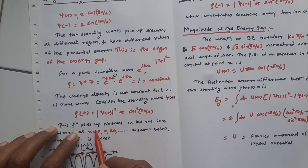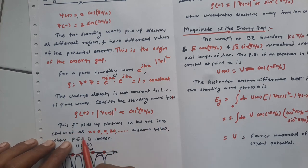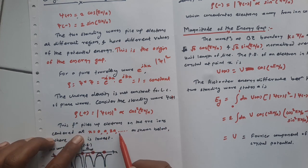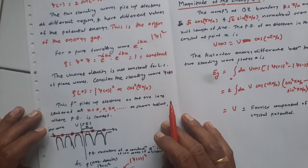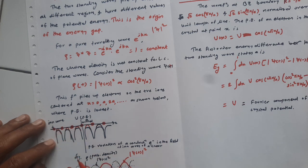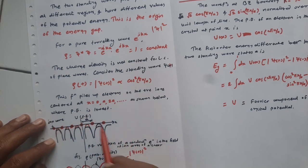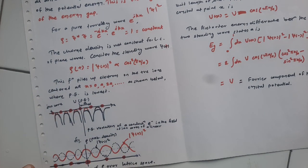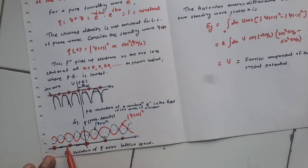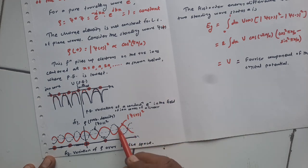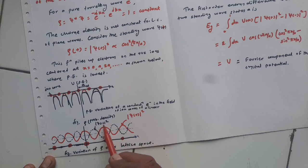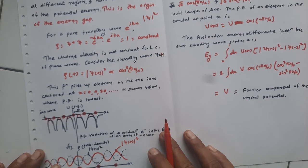The cos²(πx/a) function piles up electrons on the positive ion centers at x = 0, a, 2a, 3a, as shown in the figure. Here we can see the ion cores, and this is the corresponding potential energy distribution for atoms present at the lattice sites. ψ+ concentrates electrons near the ion cores, while |ψ-|² gives the probability density away from those points.